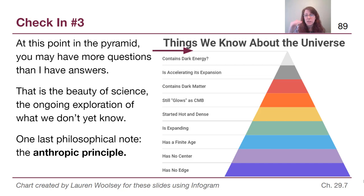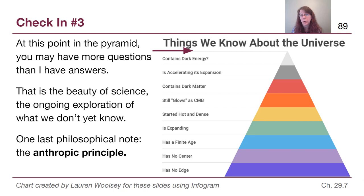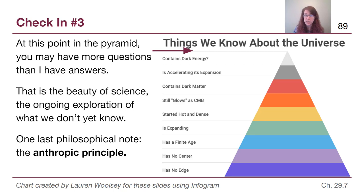Dark energy even has a question mark because it's something currently being worked on with a lot of unknowns. At this point in the chapter, you may have more questions than I have answers, and that's one of the beauties of science — it really is an ongoing exploration. The goal is to figure out what we don't know, which means in science there will always be things we're still figuring out.